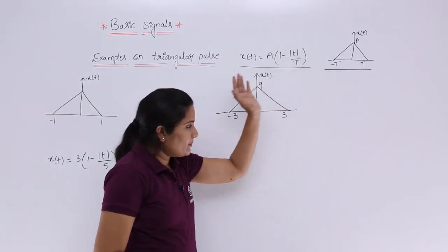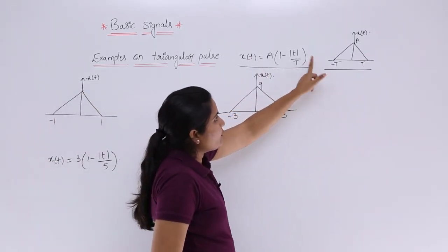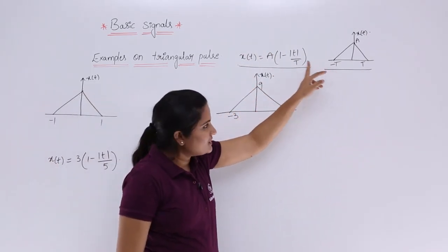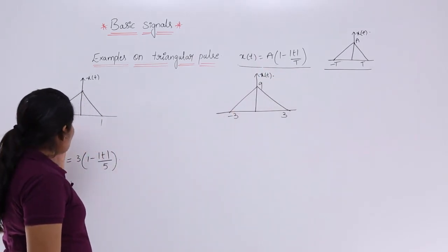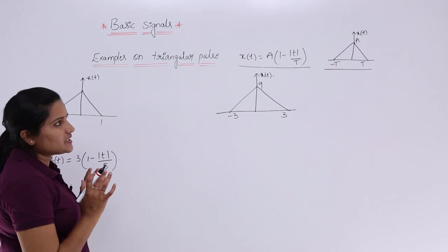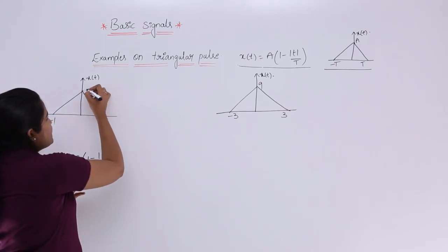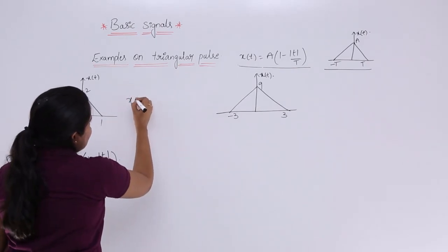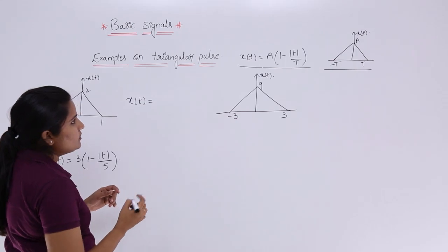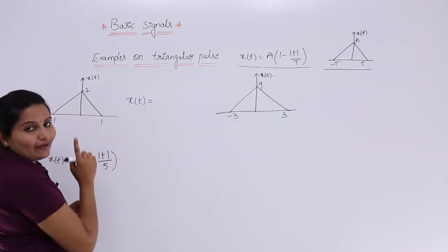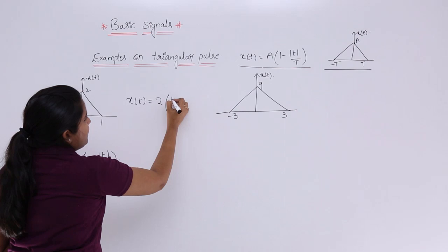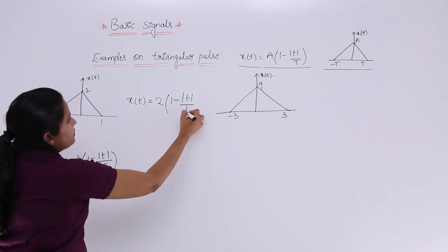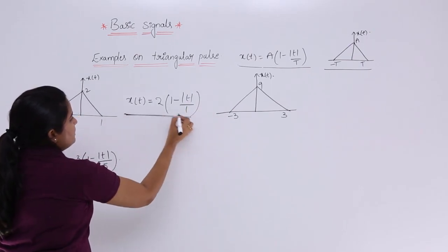Here, I am going to compare this signal with the standard signal and write the equation for this signal. For this particular triangle, this is the equation. For example, if you consider time period T equal to 1 and amplitude A equal to 2, then the equation for this signal will be X(T) = 2 × (1 − |T/1|). So this is the equation for this signal.